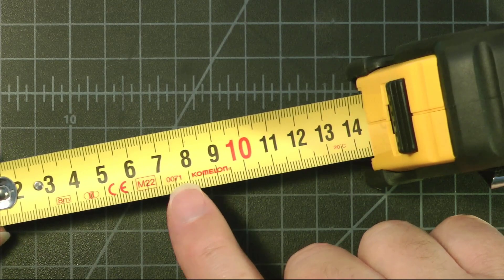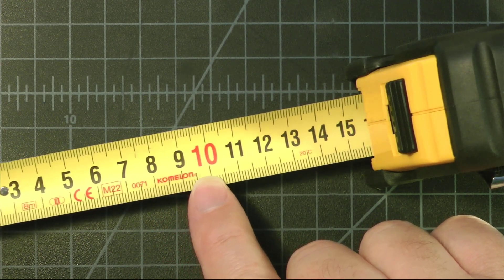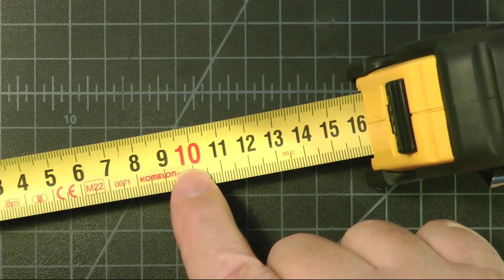As we progress up the tape measure, we have 5, 6, 7, 8, 9, 10, and the 10 is in red.